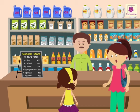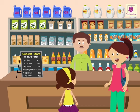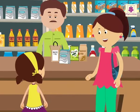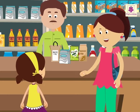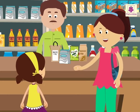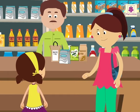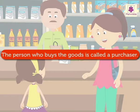Hey Lily, look — we are at a general store. Can you see that board that reads 'Today's Rates'? It shows the rates of goods for today, and the rates may vary every day. Today we shall buy one kilogram of sugar, one kilogram of peas, one kilogram of rice, and one kilogram of soya beans. Do you know, the person who buys goods is called a purchaser?